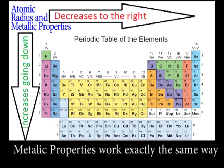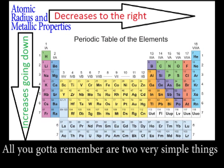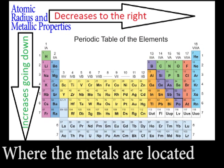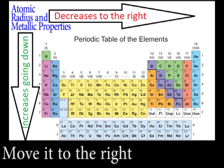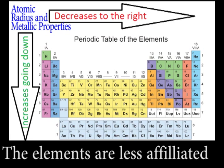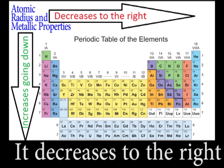Metallic properties are exactly the same way. All you gotta remember are two very simple things. On the left side of the table, where the metals are located, move it to the right, the elements are less metallic. It decreases to the right.